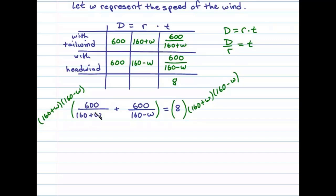For this first term, the 160 plus W will cancel, and we'll be left with 600 times 160 minus W. Multiplying times the second term, we can see the 160 minus W will cancel, and that'll leave us with plus 600 times 160 plus W.